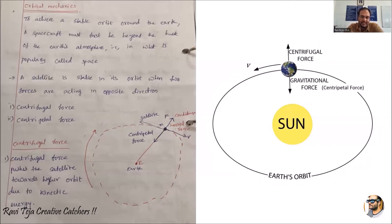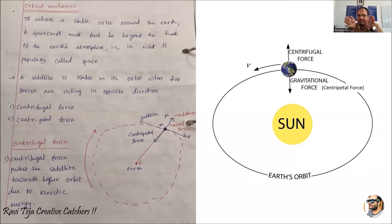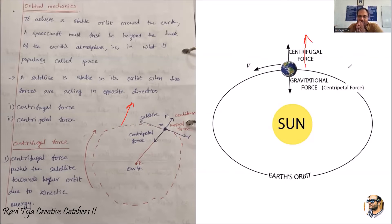The same concept applies to the satellite traveling around the earth as it does to the earth traveling around the sun. Centrifugal force pushes the satellite towards a higher orbit due to kinetic energy. Kinetic energy is the energy applied when a satellite is moving around the earth, and that force acts outward from the orbit. The satellite tries to move away from the orbit due to this centrifugal force driven by kinetic energy.